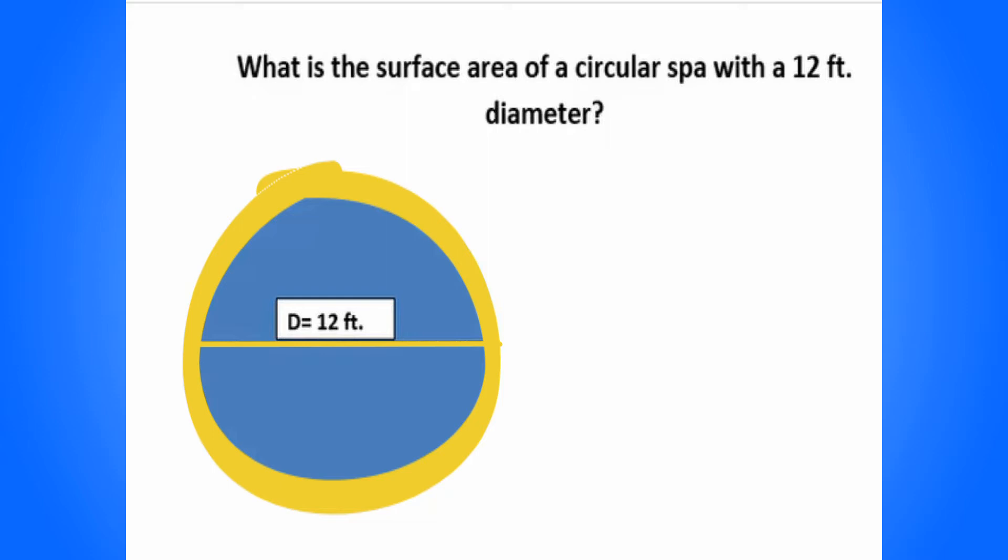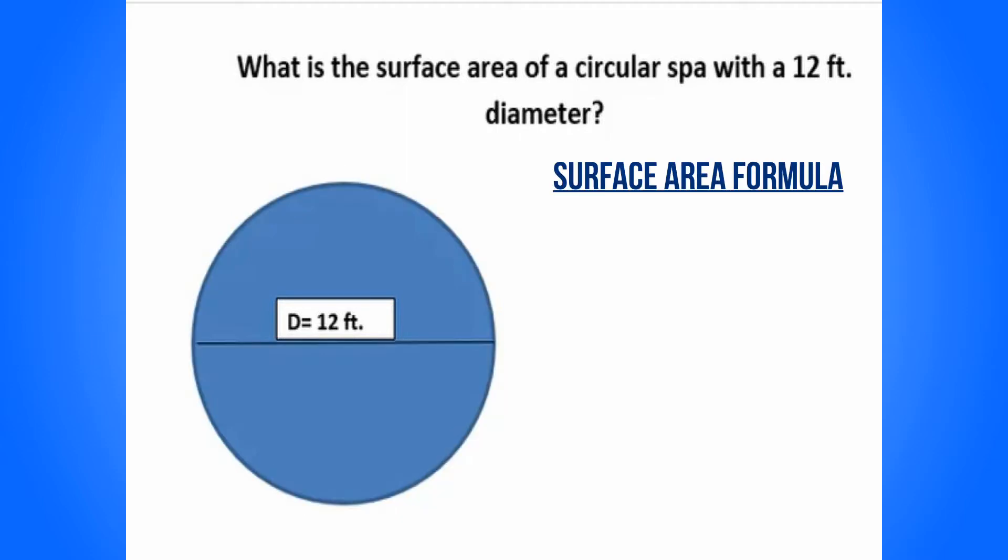So first we need to identify the formula that we're going to use. Let's go ahead and write that out. Surface area of a circular spa would be R times R times 3.14, which is part of the formula. It's pi.